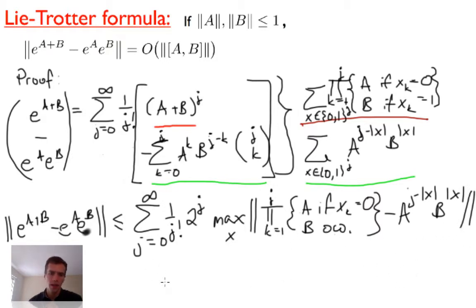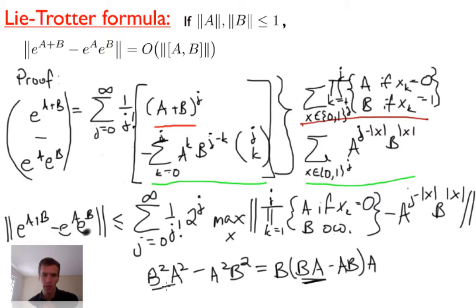How large is this term? It's fairly easy to bound. Let me give you a simple example. Say we have B²A² minus A²B². That's BBAA minus AABB. We can rewrite this as B times (BA - AB) times A. The first term gives us what we want here. The second term BABA we have to cancel out: plus BABA minus A²B².